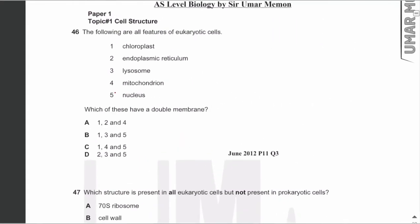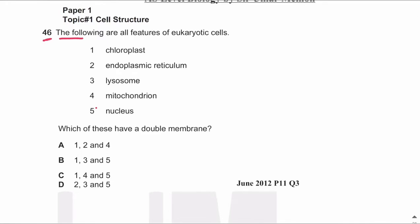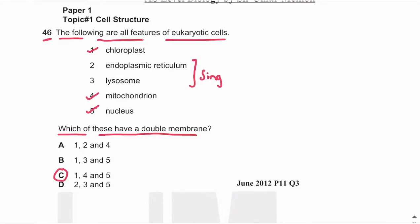MCQ number 46: the following are all features of eukaryotic cells — which of these have a double membrane? Chloroplast is a double membrane-bound organelle, mitochondrion is a double membrane-bound organelle, and the nucleus is a double membrane-bound organelle. So the answer is C (options 1, 4, and 5). Endoplasmic reticulum and lysosomes are single membrane-bound organelles.